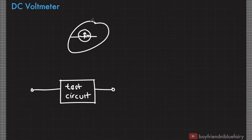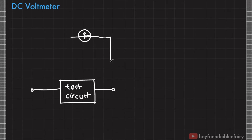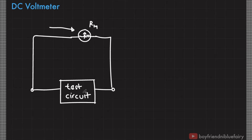Let's return to our galvanometer. This time we would like to use the galvanometer as a voltmeter. If this is our test circuit, we would like to measure its potential from one end to the other. If we directly connect our galvanometer, recall that it has a very small internal resistance R_m. Therefore, in the process it will draw current from our test circuit, causing a significant potential drop, and we will not be able to measure the original voltage.